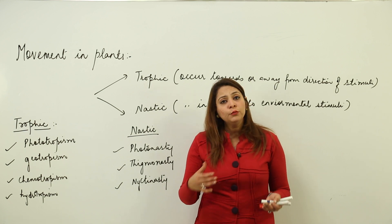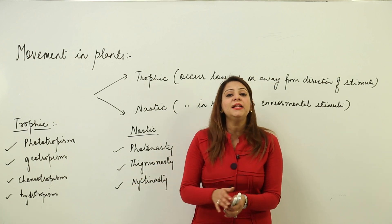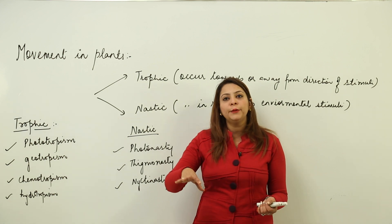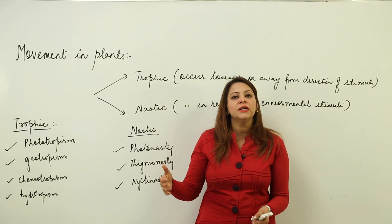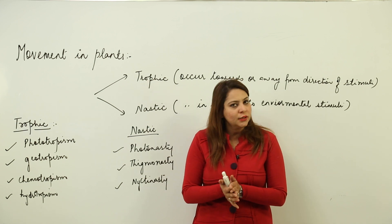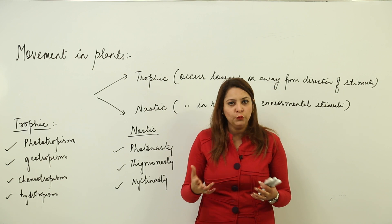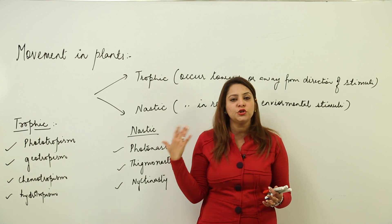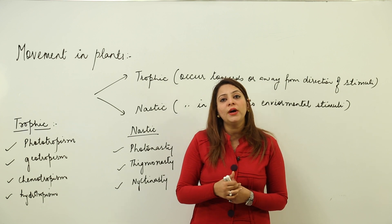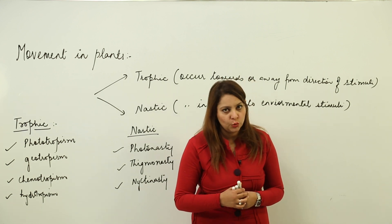Plants cannot move from one place to another, but they can show certain kinds of movements by moving their body parts in response to a stimulus. A stimulus is the change in the external environment. In response to a stimulus, they show different kinds of movements, which we are going to study.